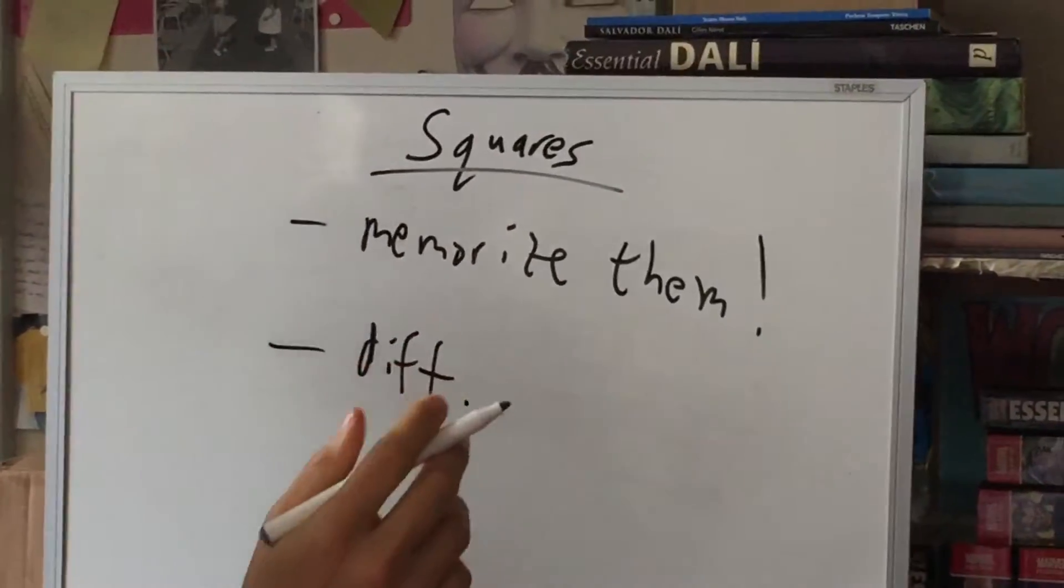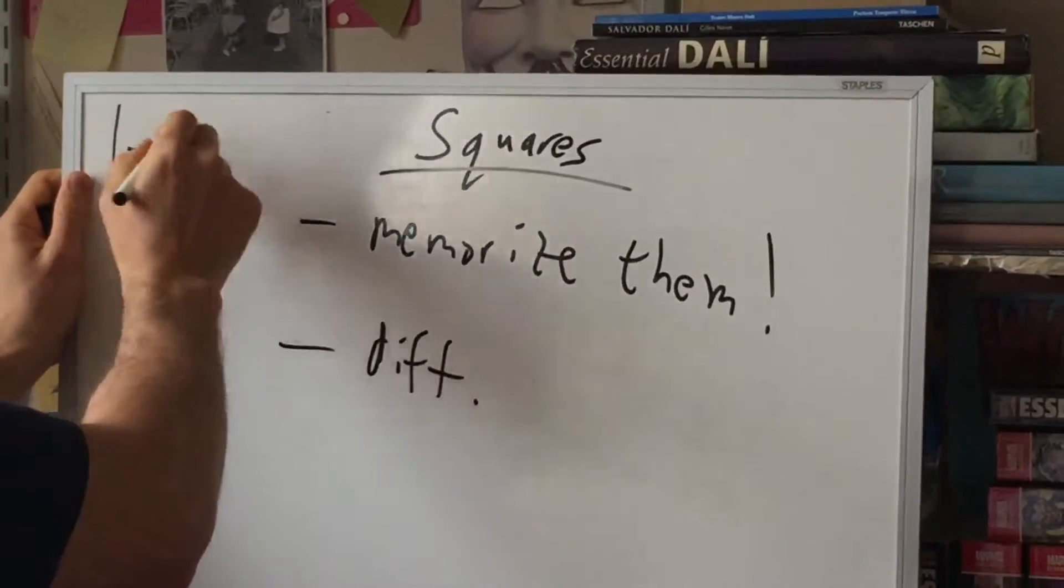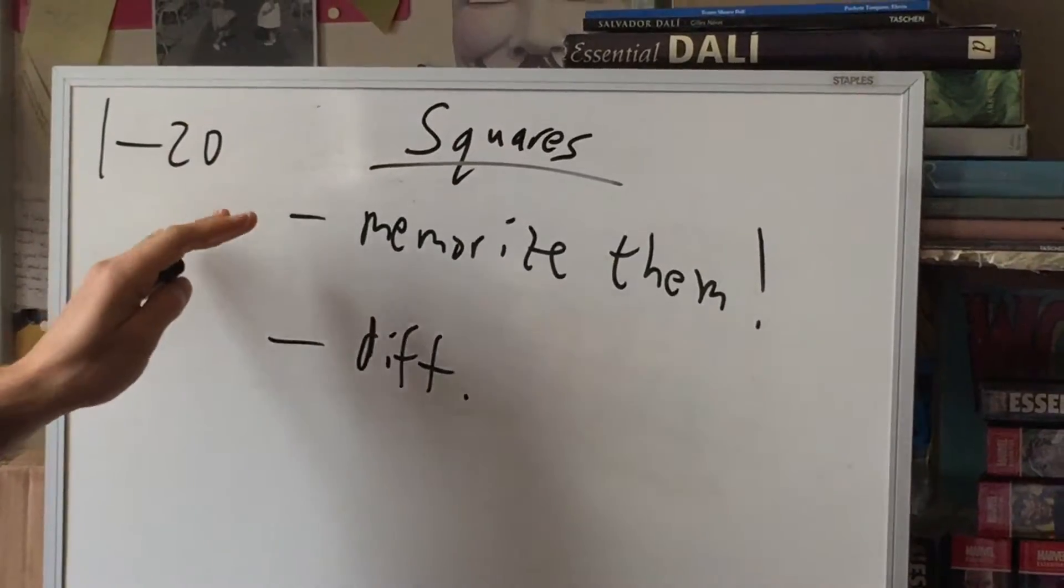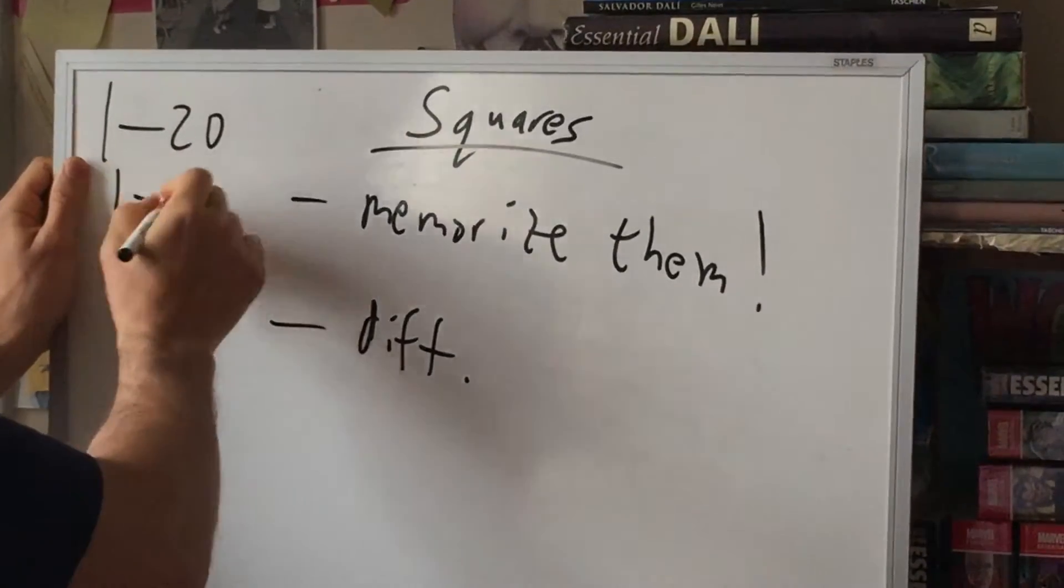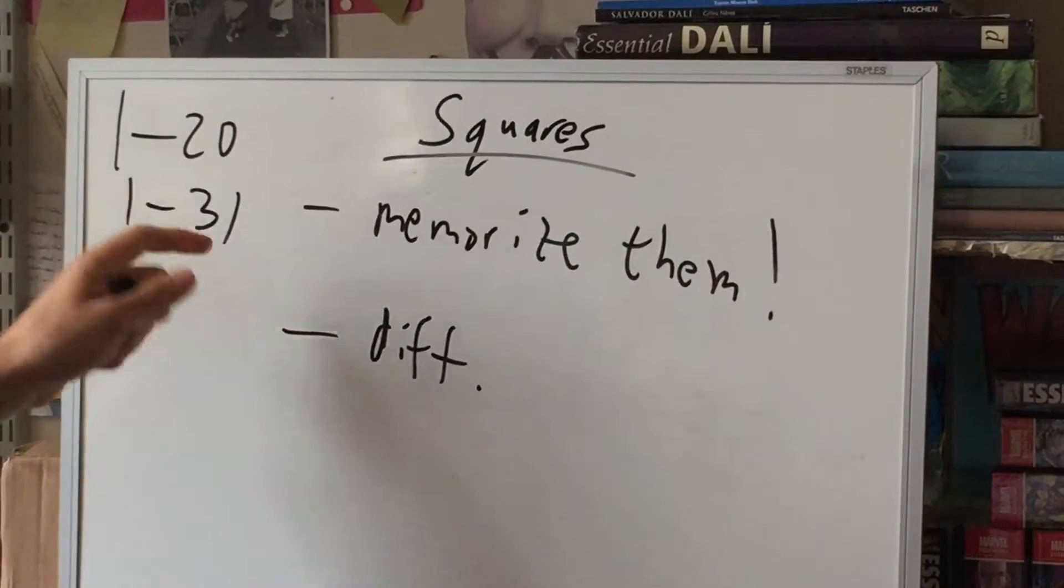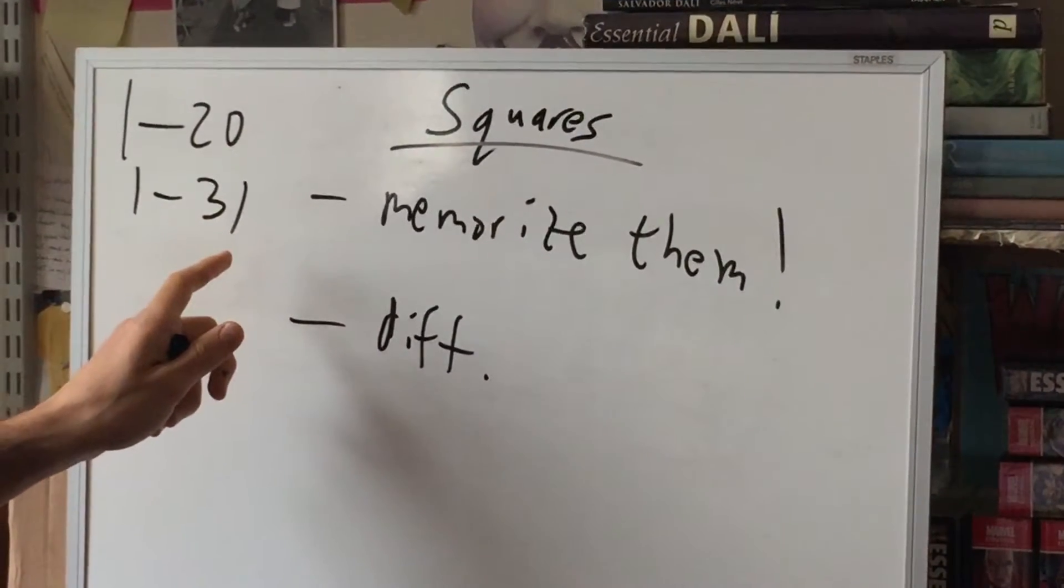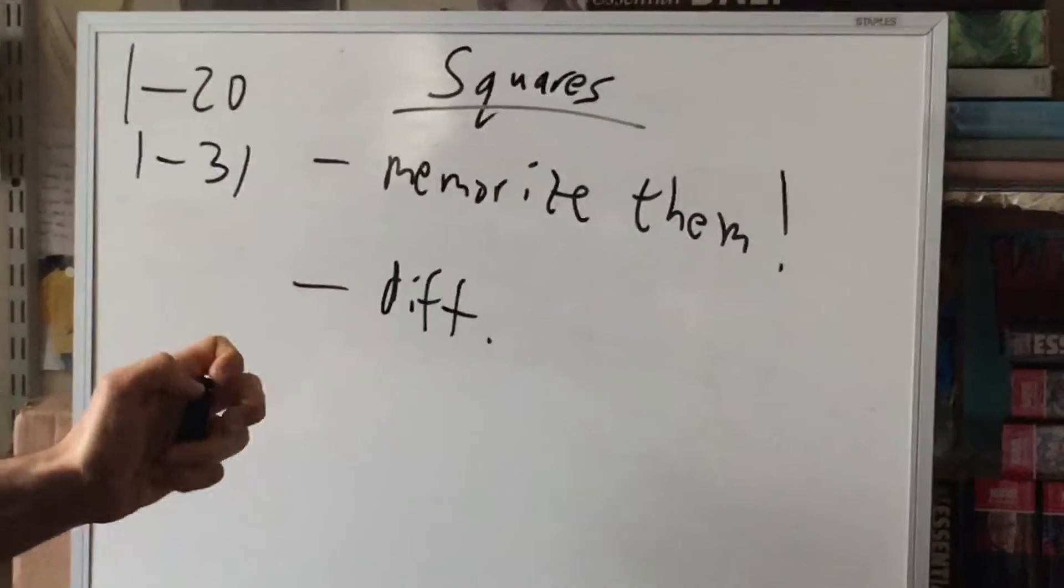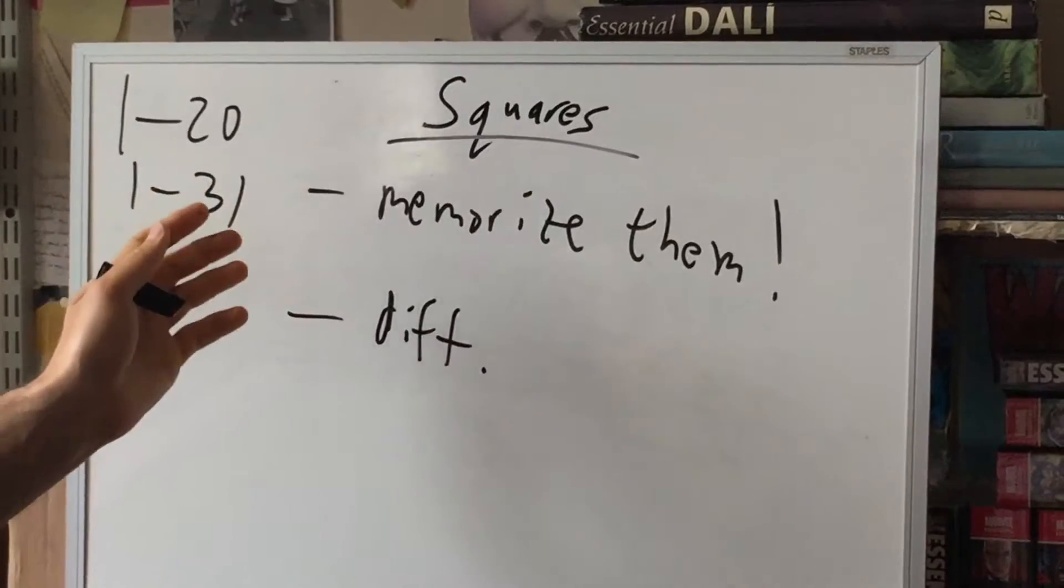So which ones are we talking about? I recommend 1 through 20 for most people. Now, if you really want to be an overachiever, I would go through 31. Why did I pick 31? Because 31 squared is 961, which is the last three-digit number under 1,000. So in practice, these are the numbers you tend to see.